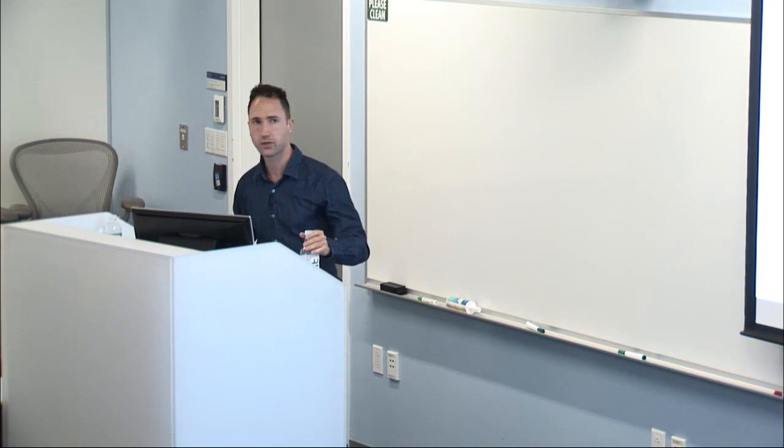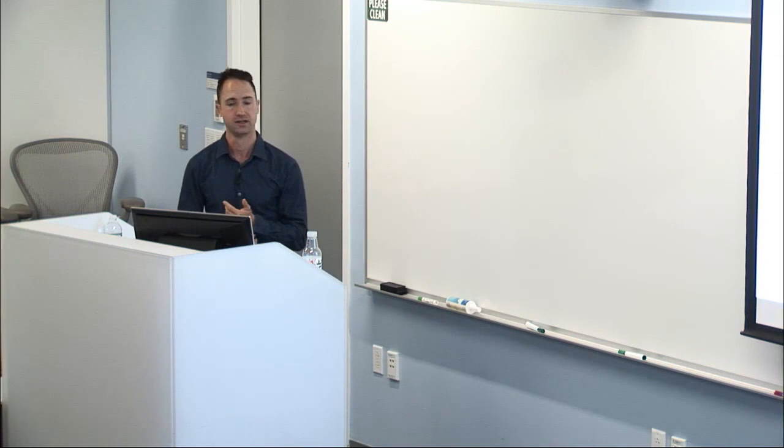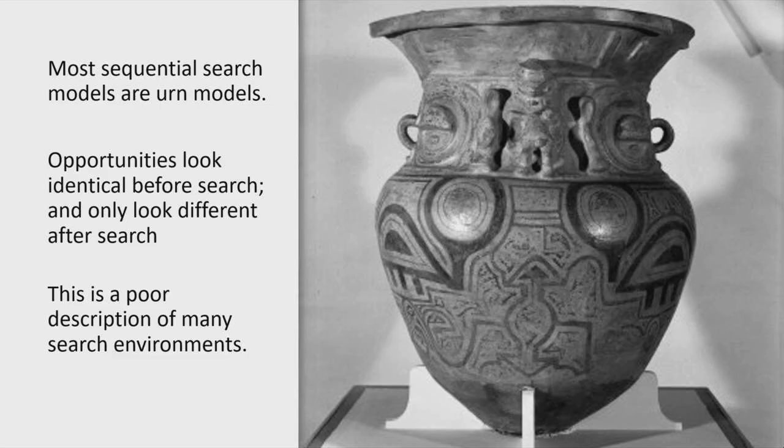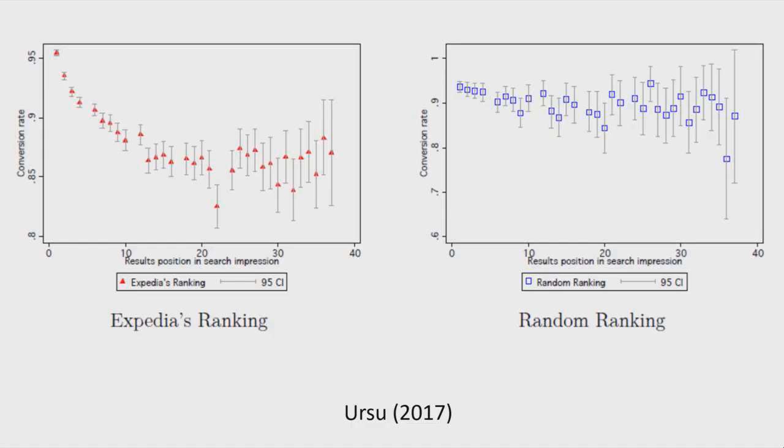For the beginning of the talk, I'll lead you through some classic search models and then explain how ours differs. I'll go through some examples, show some empirical evidence, and then describe the structural model we fit to the data. The classic models of search in economics come from decision theory and are urn models.